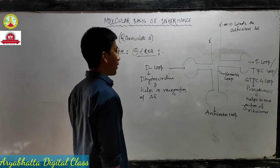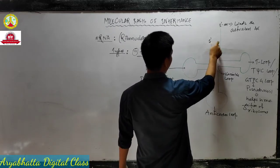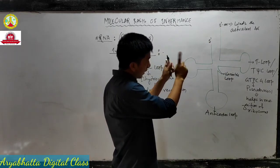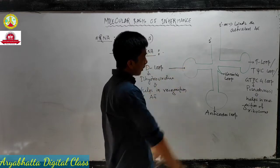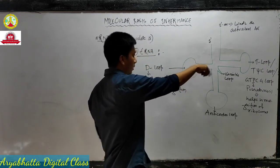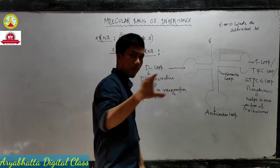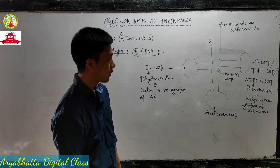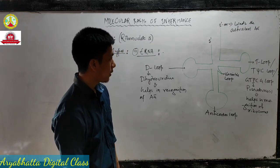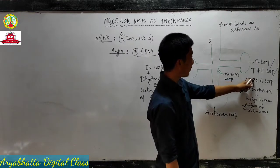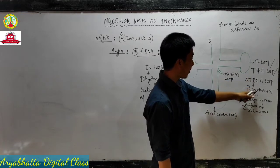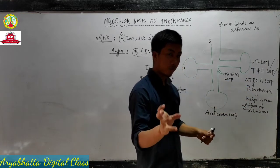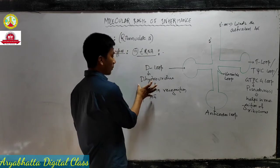Remember - this strand is shorter compared to the other strand, don't make them equal length. Try to make the round structure beautiful. The T loop has many names - remember it helps in ribosome recognition. The D loop helps in recognition of amino acids.